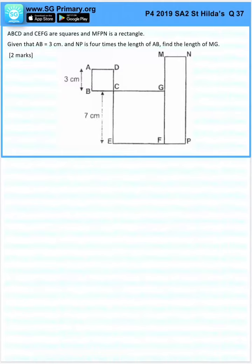Question 37. ABCD and CEFG are squares and MNFP is a rectangle.